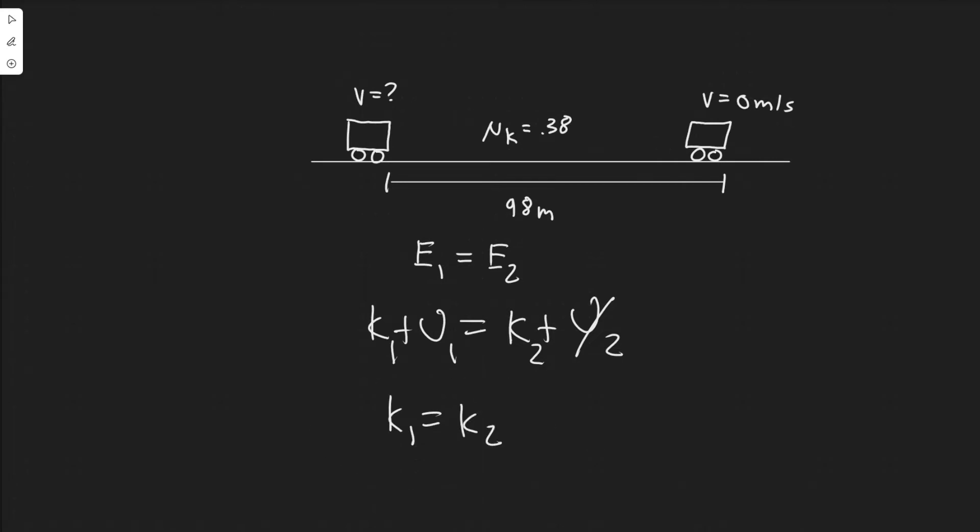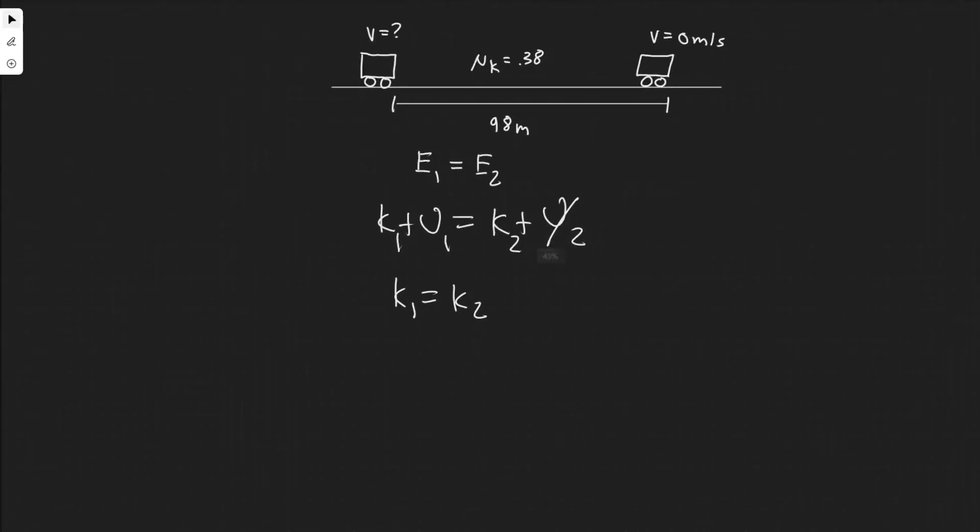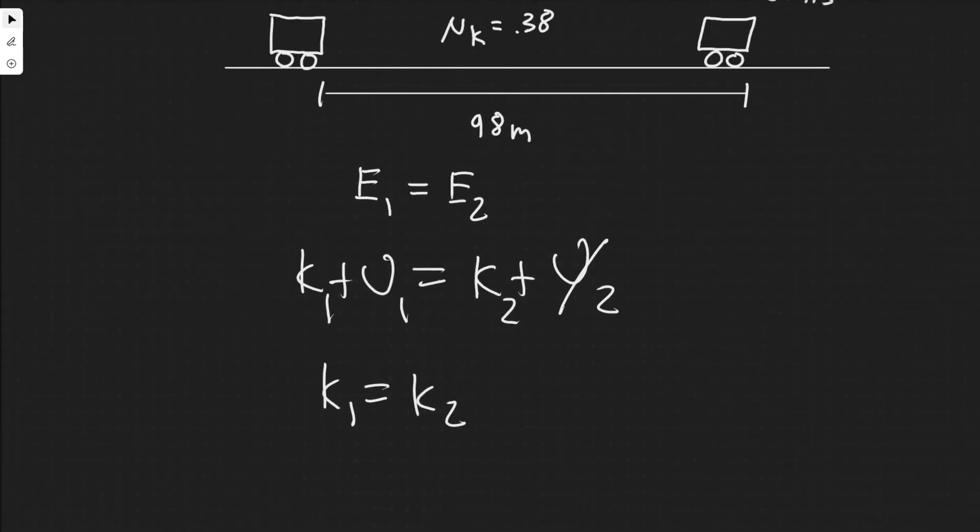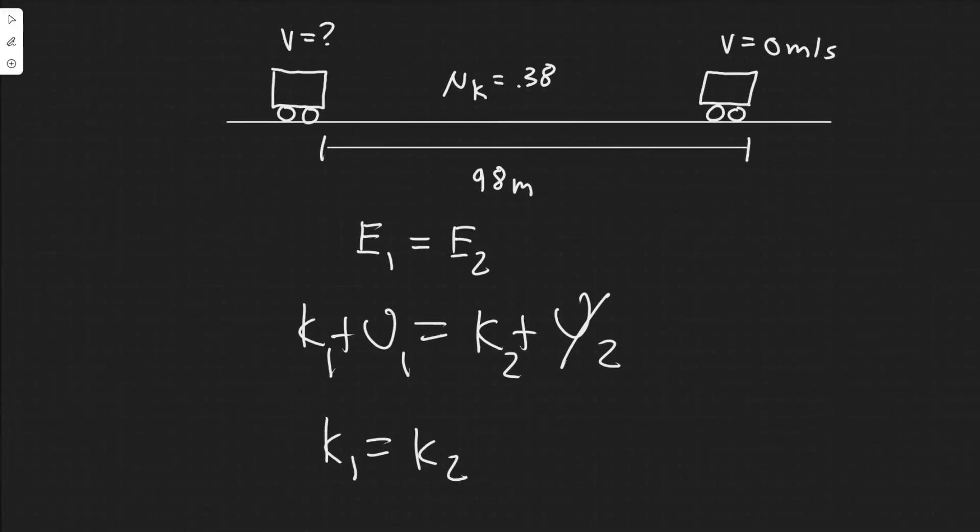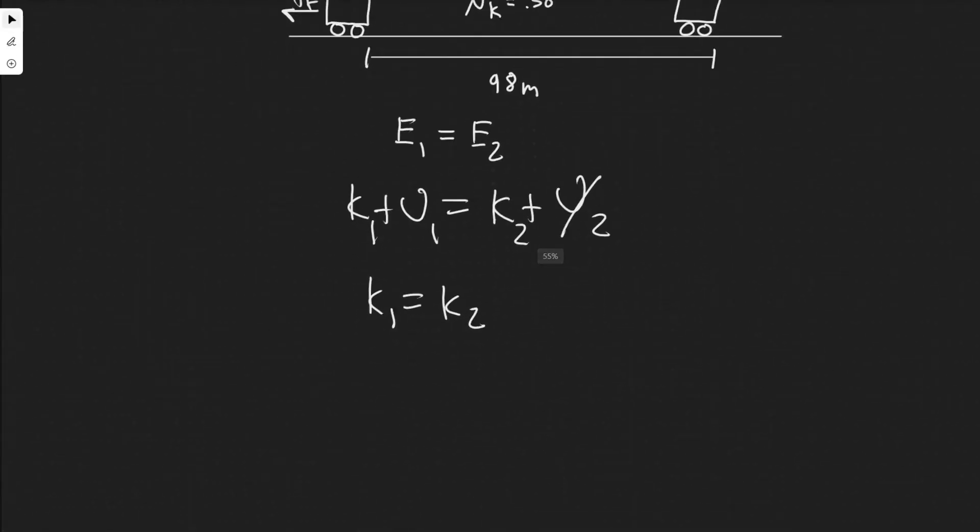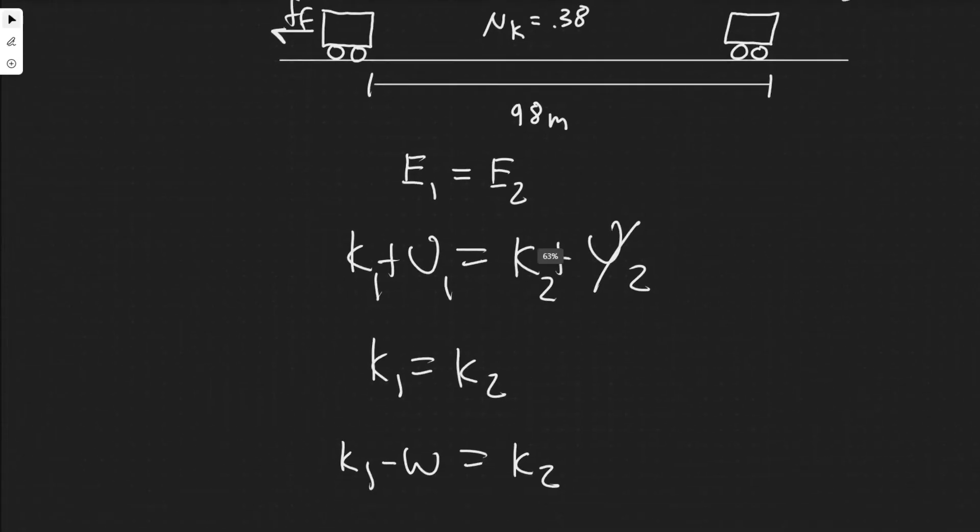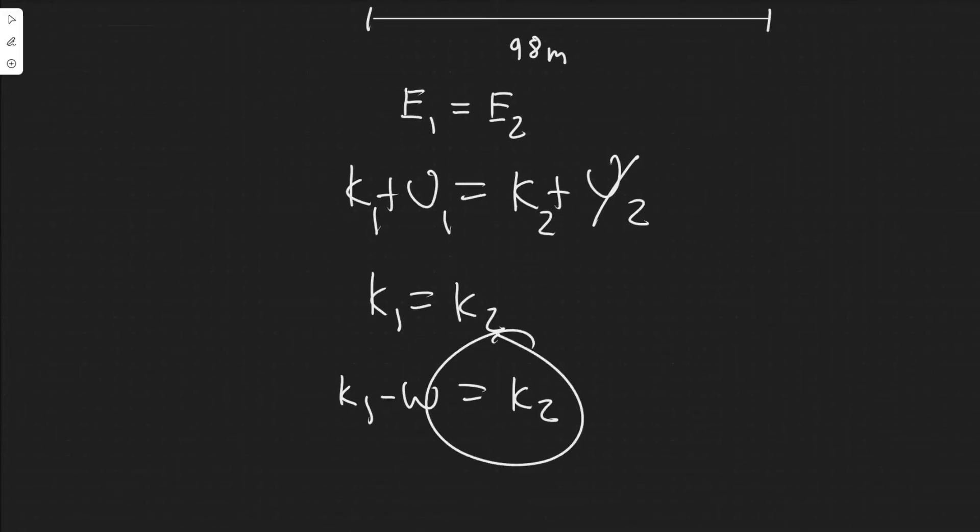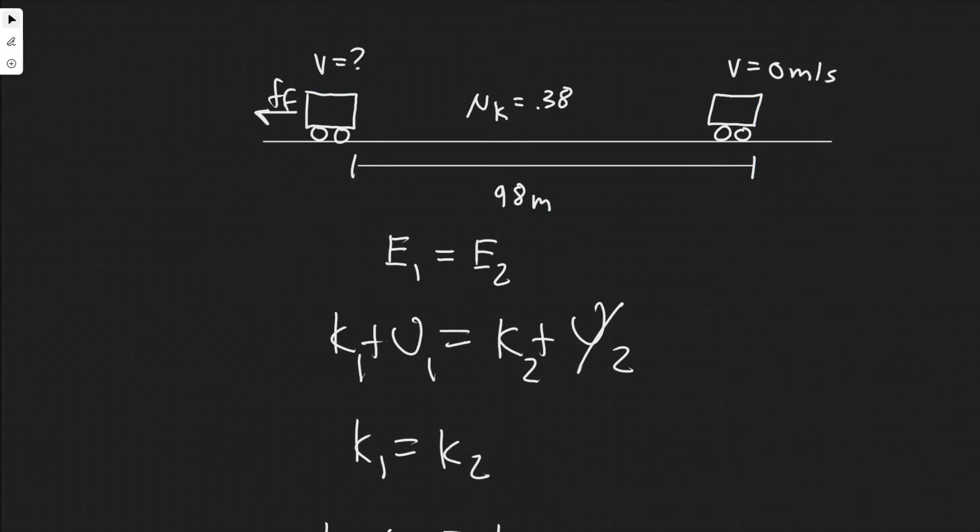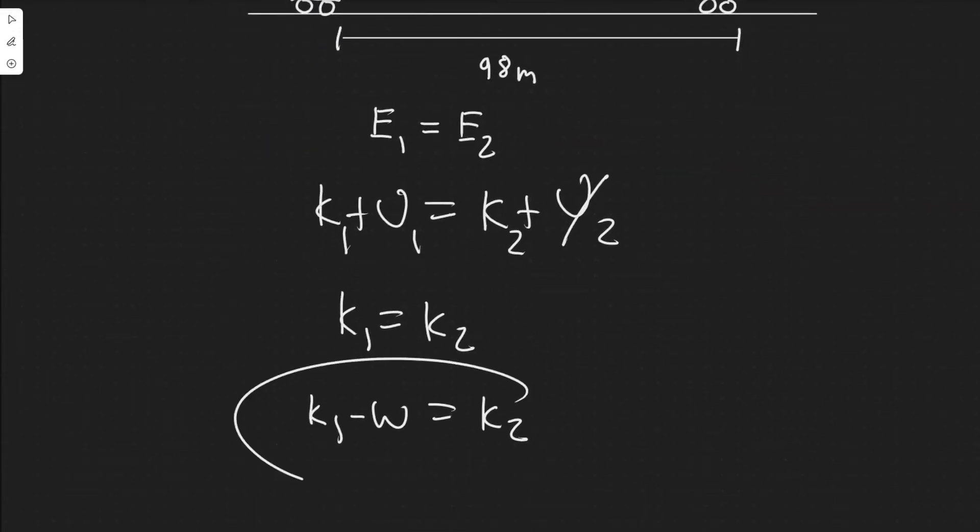You have to keep in mind energy lost or gained as a result of work. We know there's going to be a force of friction stopping it. We have some energy in the beginning, and that's equal to the energy at the end, but we subtract energy lost as a result of friction, which is the work done by friction. This is the formula we're going to use to solve.